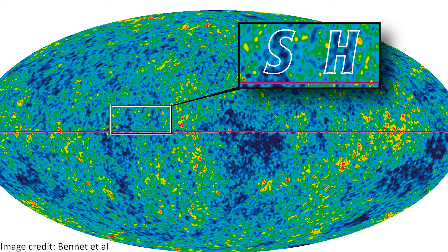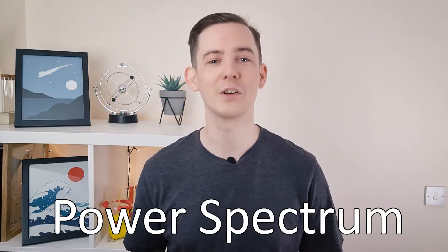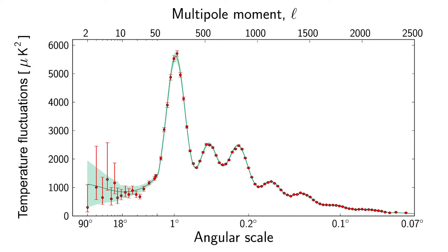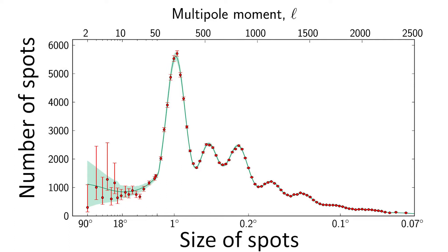Otherwise, the CMB map would look very different. Rather than looking at this colourful map all the time — which hurts your eyes after a while and you start seeing writing and images in the blobs — cosmologists prefer to plot something called the power spectrum of the temperature fluctuations. This basically tells us how many spots of a certain size we see in the CMB background. The horizontal axis is the size of the spots on the sky, and the vertical axis tells us how many spots of that size we see. You can think of it like a probability distribution: the higher the curve is at a given point, the more likely you are to find spots of that size in the CMB.